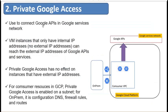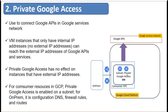Private Google Access allows you to connect to Google APIs within the Google Service Network. VM instances that have only an internal IP address and no external IP address can reach the external IP addresses of Google APIs with this option. Private Google Access has no effect on instances that have an external IP address — for those, the connection to Google APIs is always public. For consumer resources in a VPC, Private Google Access is configured on the subnet where the resource is hosted. For on-prem, the configuration involves DNS, firewall rules, and routers, and on-prem must connect to the VPC via Interconnect or VPN tunnel.